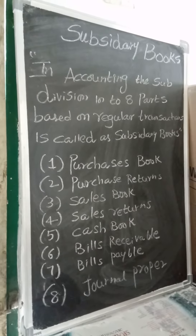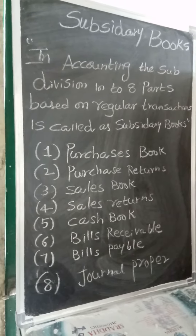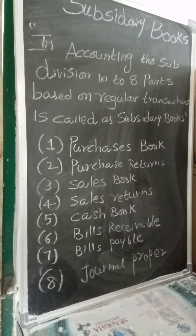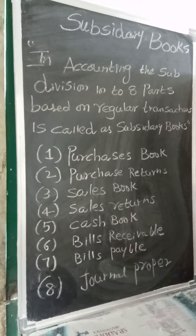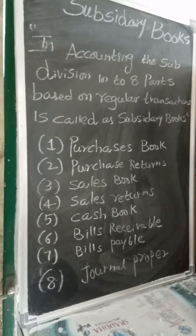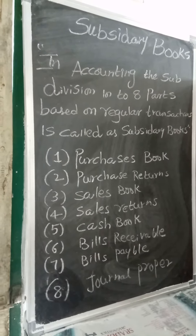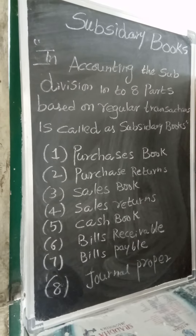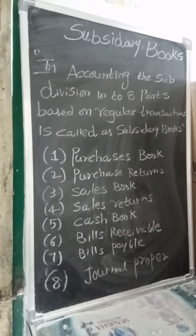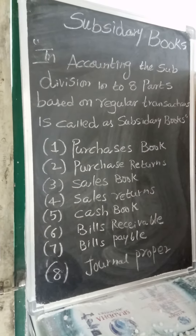Today's topic is subsidiary books. The subdivision of the journal day book into eight parts based on recurring transactions is called subsidiary books. Every day there will be purchases, purchase returns, sales, sales returns, bills receivable, and bills payable. Based on these transactions, the journal day book is made into eight parts — that is known as subsidiary books.